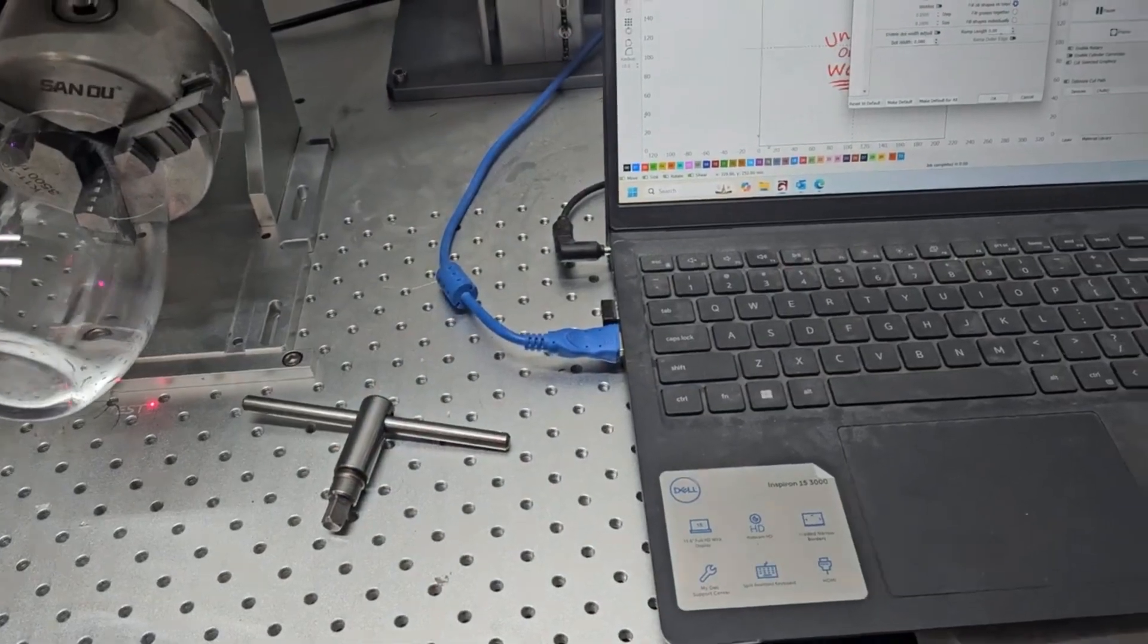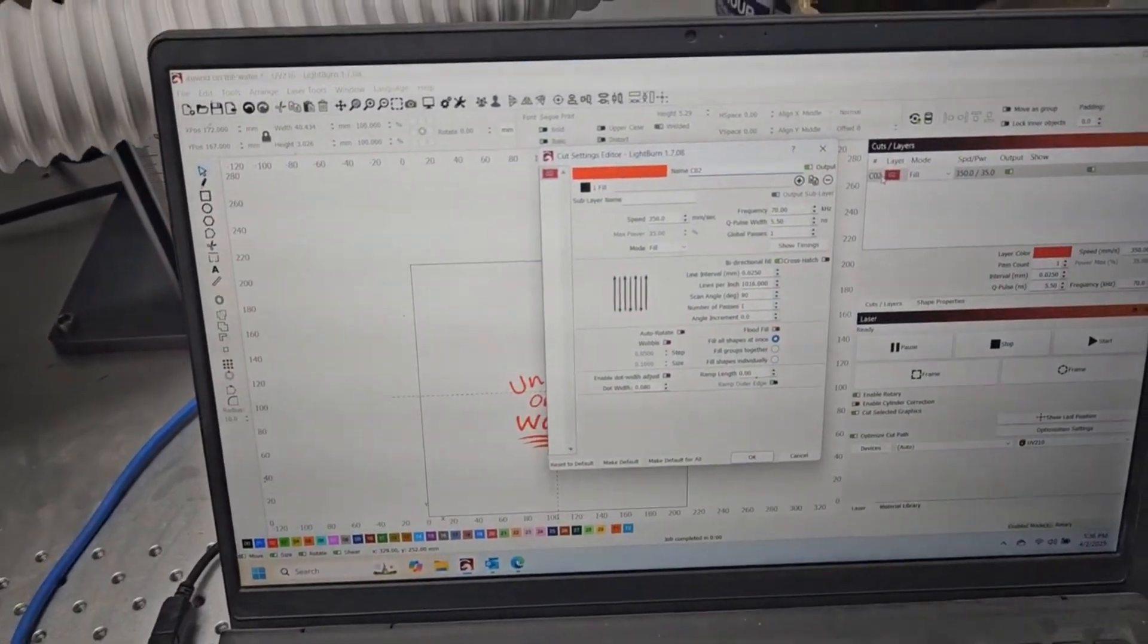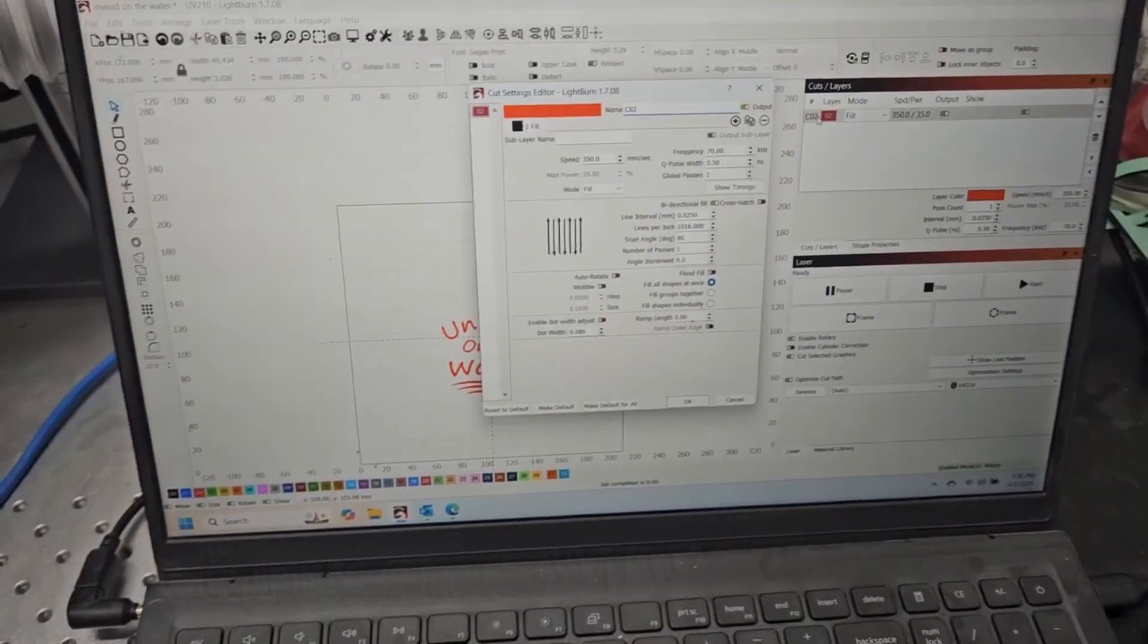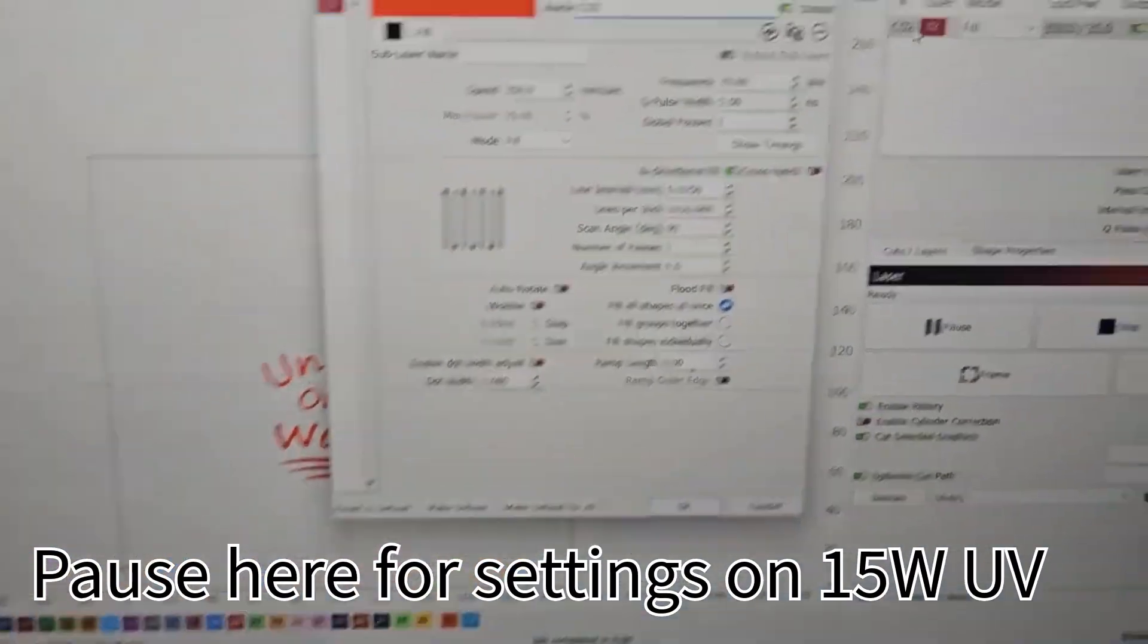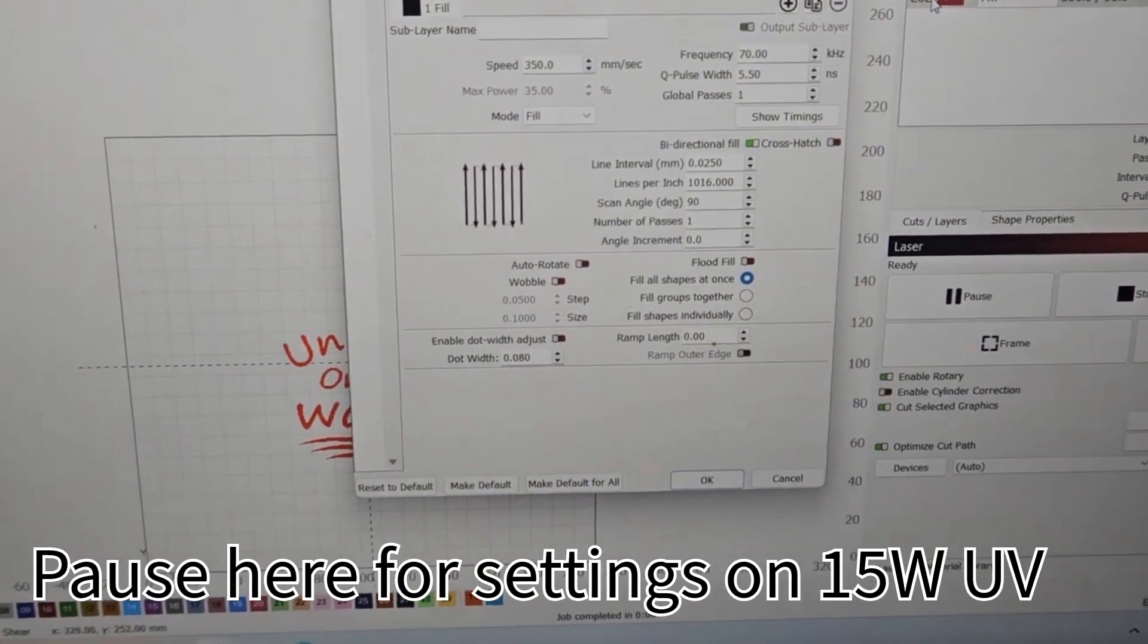So first I'm going to show you the settings we use. Hopefully you can see that there. Let me zoom in here a little bit. These are the settings I use on glasses. Again, this is a 15-watt UV laser.